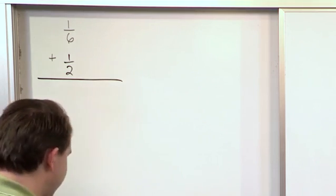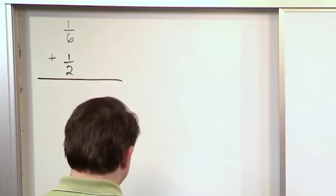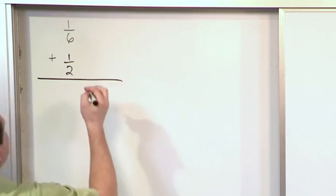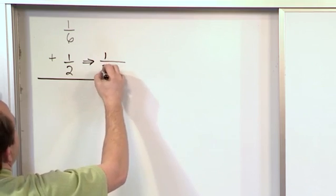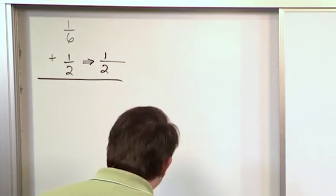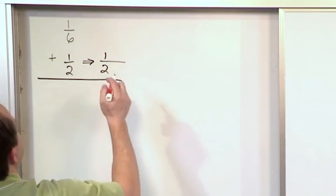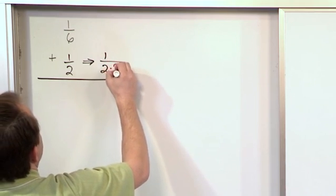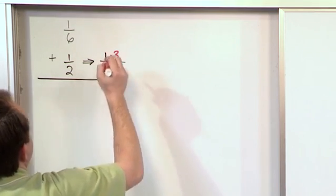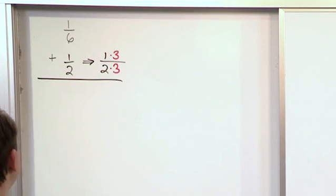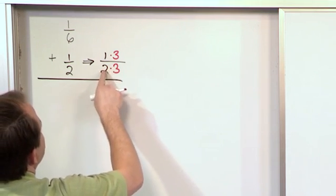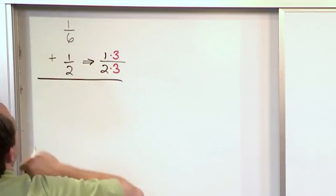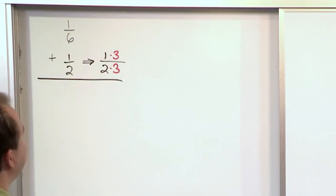Now let me ask you this. What if I transform this bottom fraction, which is one-half? You know we already said we can do anything we want to it as long as we do it to the top and the bottom. What if I multiply by three on the bottom and three on the top? Why would I do that? Because I know that two times three is six and that's going to give me a bottom number of six, which is the same as what the other fraction is. I'm trying to get a common denominator.